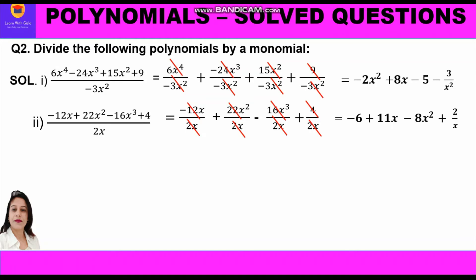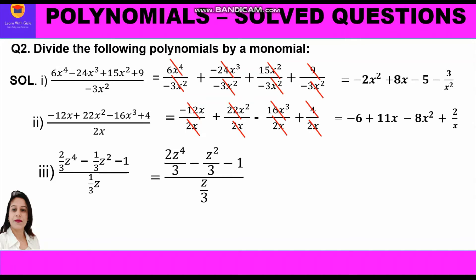The third part is (2/3·z⁴ - 1/3·z² - 1) divided by (1/3·z), which we rewrite as (2z⁴/3 - z²/3 - 1) divided by z/3. There are three terms in the polynomial, so we split each term and divide by z/3: (2z⁴/3) ÷ (z/3), then (z²/3) ÷ (z/3), then 1 ÷ (z/3).